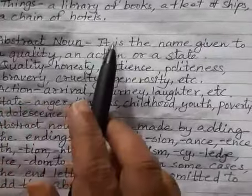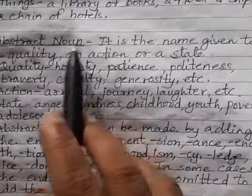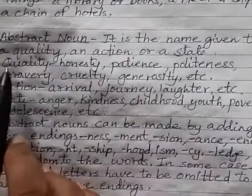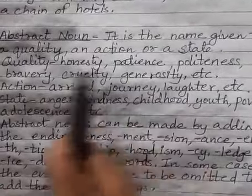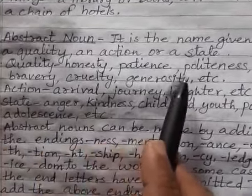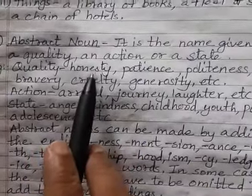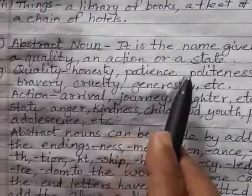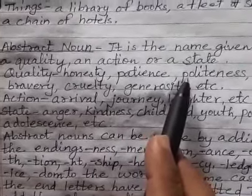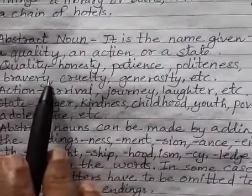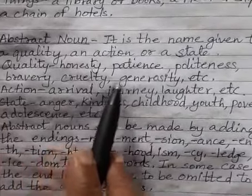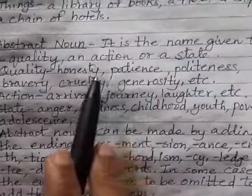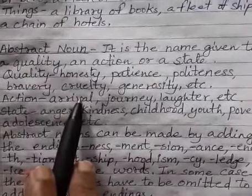The fourth type is abstract noun. It is the name given to a quality, an action, or a state. Examples of qualities include honesty, patience, politeness, bravery, cruelty, and generosity. We say 'honesty is the best policy,' we should have patience, we should talk politely with elders, and we should be brave. Such words which denote a quality are called abstract nouns.